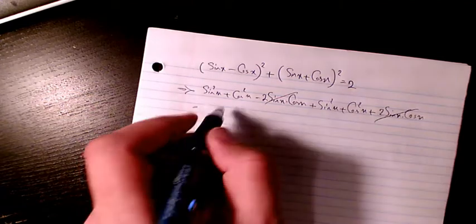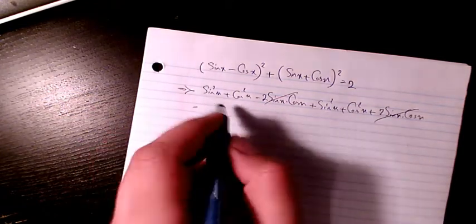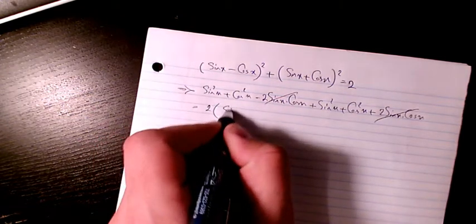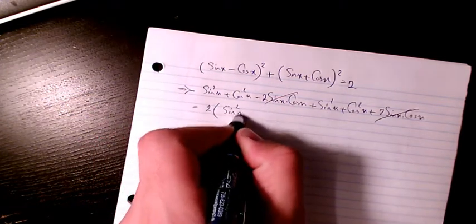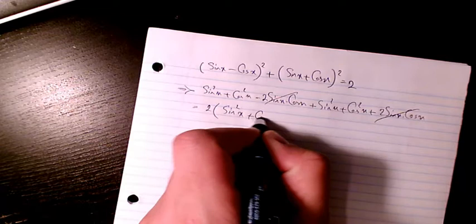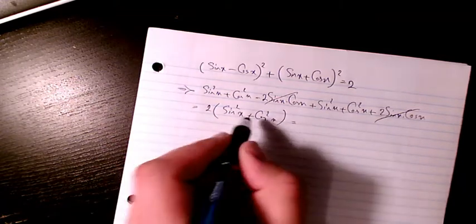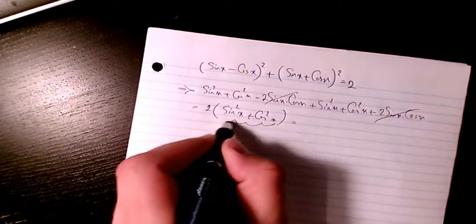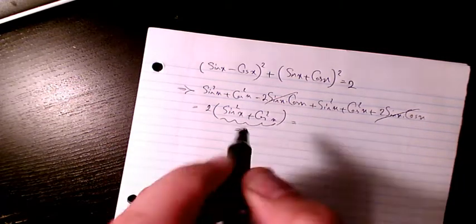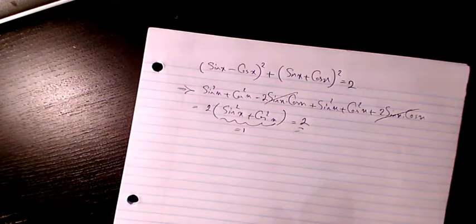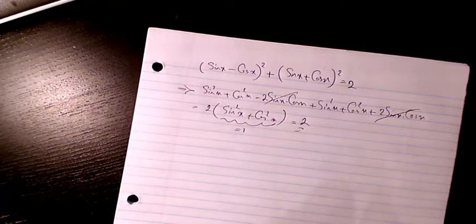The cross terms cancel out, and I have two times (sine squared x plus cosine squared x). Since sine squared x plus cosine squared x equals one, the answer is two. As you can see, that's verified.